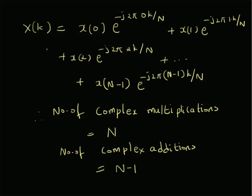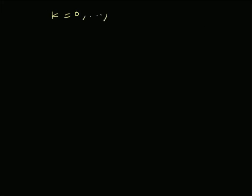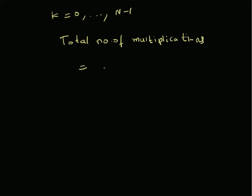Since k ranges from zero to N minus one, the total number of computations can be calculated as follows. The total number of complex multiplications is given by the number of values of k, which is N, multiplied by the number of multiplications for each k, which is also N. So the total number of complex multiplications is N squared.